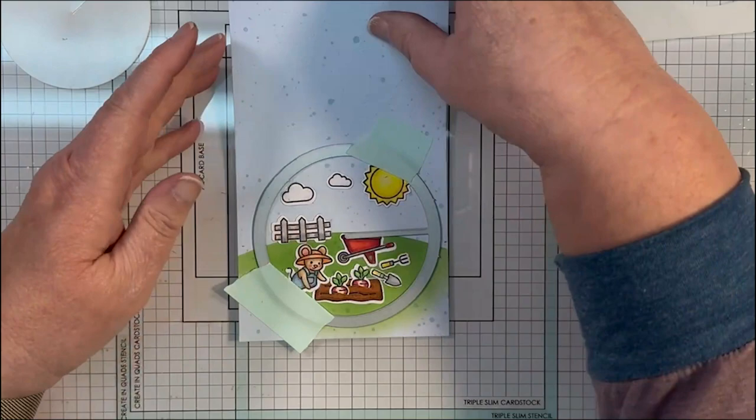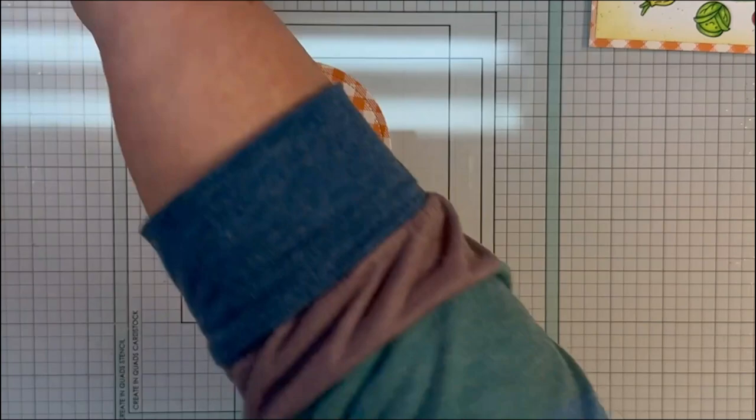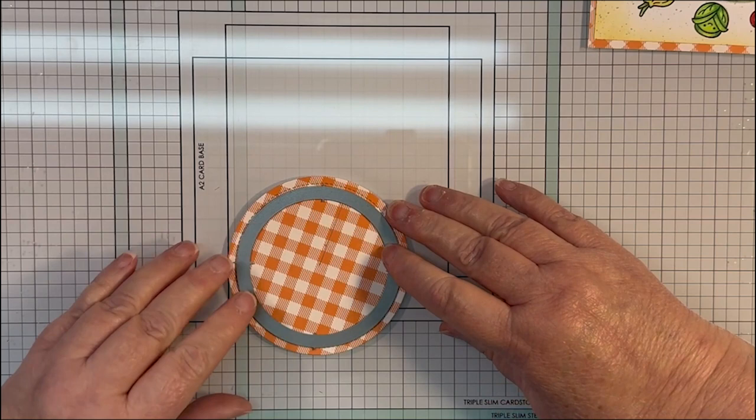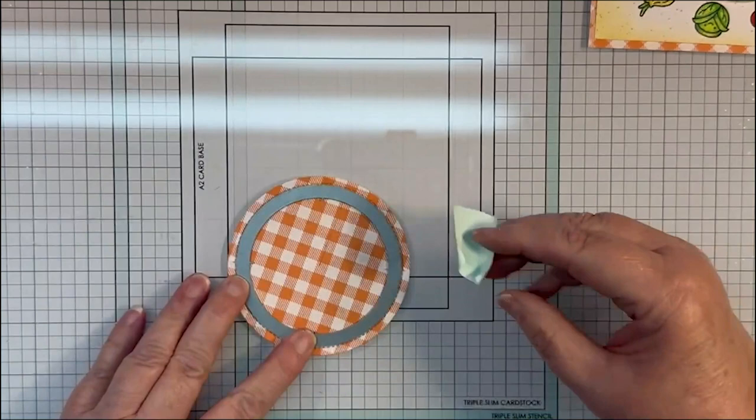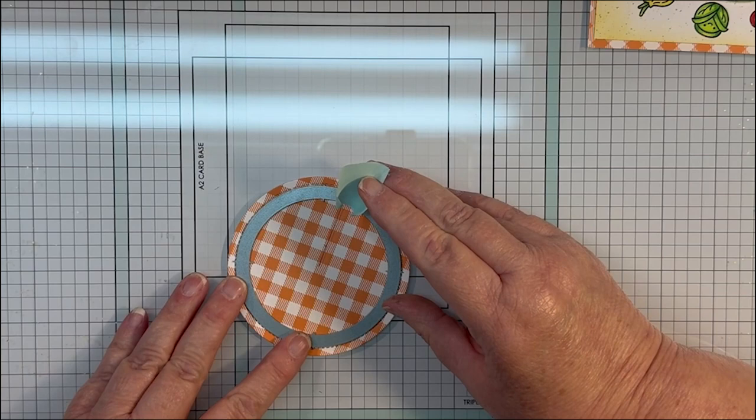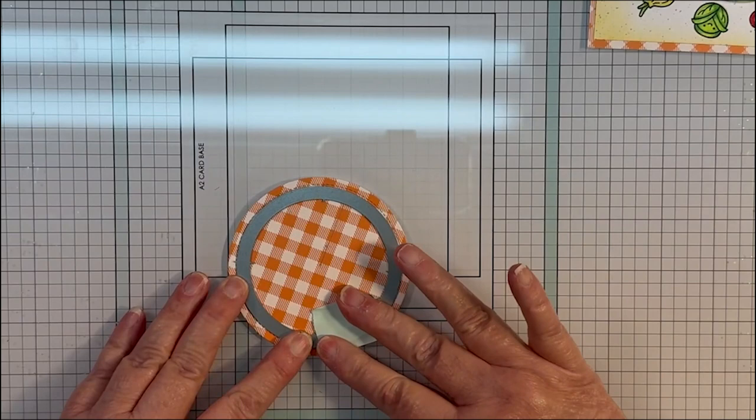I wanted to bring a little bit of the gingham that I used on the background of my card to the front. So I figured out if I cut out a piece from the Give It a Whirl die, the big piece, the one that doesn't move, and then I took my medium circle from the large stitched circle stackables and lined it up in there, I could create a little frame that will go around my little decorated piece.